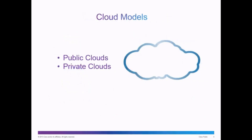There are two basic types of clouds: public clouds and private clouds. Public clouds offer services and applications to the general population, whereas private clouds are intended for specific organizations or entities such as governments and are only accessed by those private organizations.